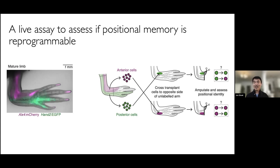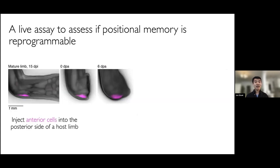The design of this experiment is that we want to take cells out of their normal environment, put them somewhere else, and see whether they keep their original identity or whether they can switch and reprogram to match the destination identity. Starting with the anterior-to-posterior transplantation: you can see the mCherry-positive anterior cells injected into the posterior of the unlabeled host. But over two weeks after injection, these cells remained mCherry-positive, suggesting that they remain anterior in identity.